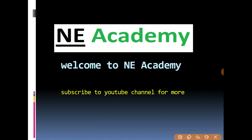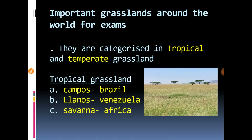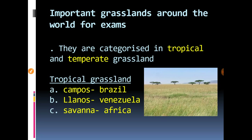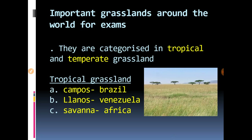Welcome back to Any Academy — do subscribe to our YouTube channel for more. Today we'll talk about the important grasslands around the world, which is very important from an exam point of view and questions are asked frequently based on this topic. Grasslands are categorized into tropical and temperate grasslands. Tropical grasslands grow between the Tropic of Cancer and the Tropic of Capricorn, while those in the temperate region are temperate grasslands.